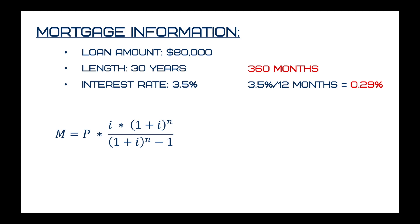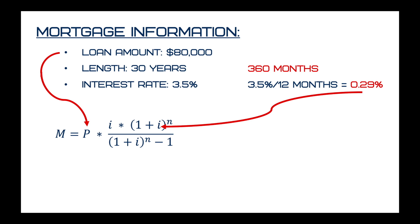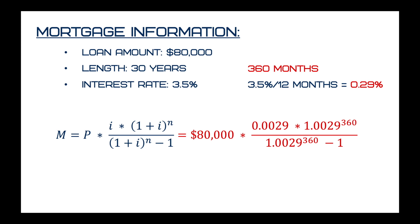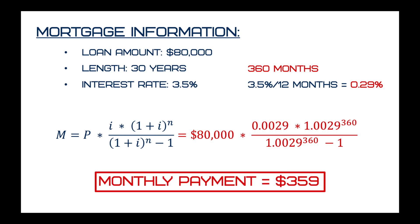The equation used to determine your monthly mortgage payment M is: M equals P times i times (1 plus i) to the n, all over (1 plus i) to the n minus 1. Here, P stands for the loan amount — in this case $80,000. I stands for the interest rate per month, or 3.5% divided by 12. And n stands for the number of months, in this case 360. Plugging in our values: $80,000 times 0.0029 times 1.0029 to the 360th, divided by 1.0029 to the 360th minus 1. All of this comes out to equal a monthly payment of $359.